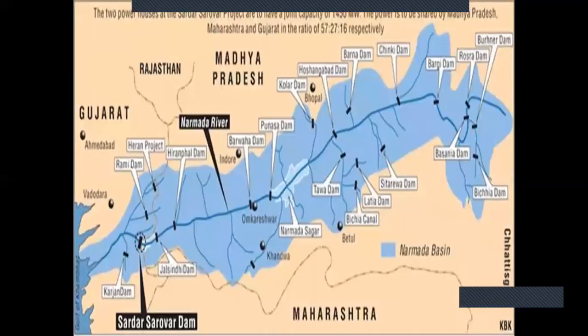River Narmada. Narmada is also known as the lifeline of Madhya Pradesh for its huge contribution to the state. There are dams built on the Narmada River, and it provides basic needs such as agriculture and household water supply.